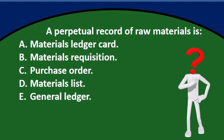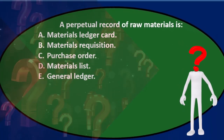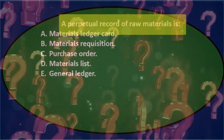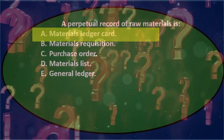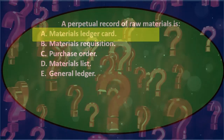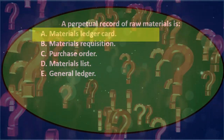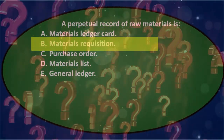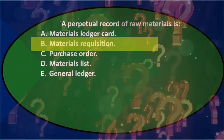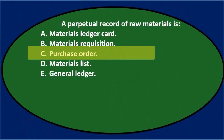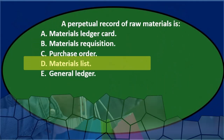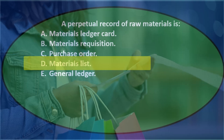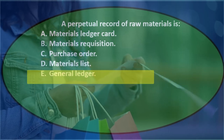Next question: a perpetual record of raw materials is — A, materials ledger card; B, materials requisition; C, purchase order; D, materials list; or E, general ledger.